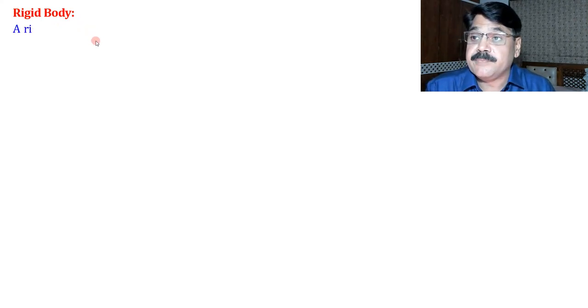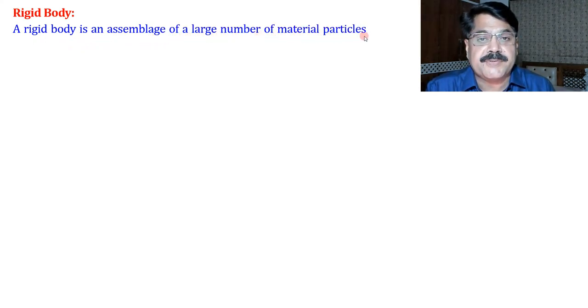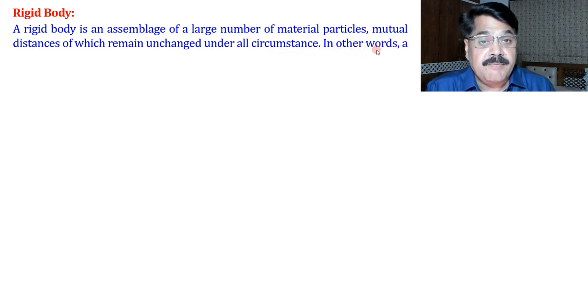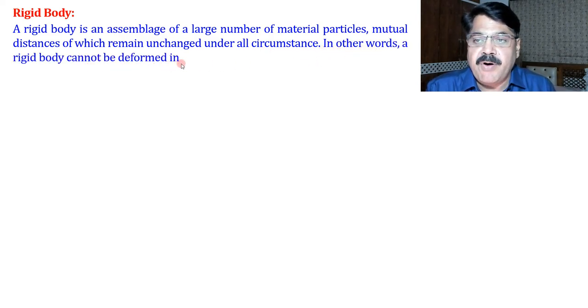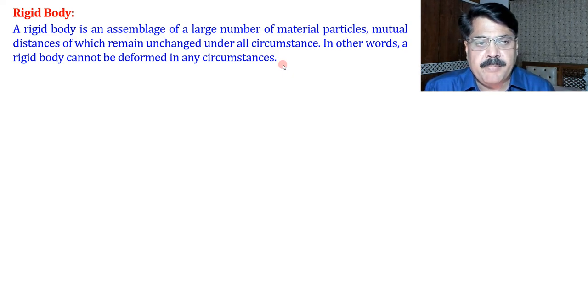Before proceeding to rotational motion, we define a rigid body. A rigid body is an assembly of a large number of material particles whose mutual distances remain unchanged under all circumstances. In other words, a rigid body cannot be deformed — none of its dimensions will change at all.